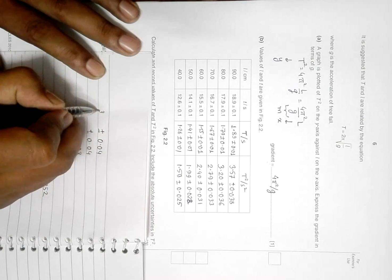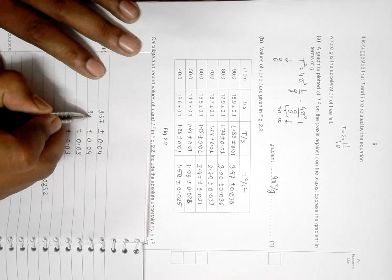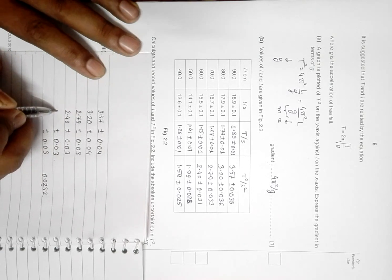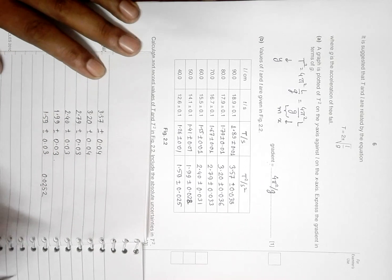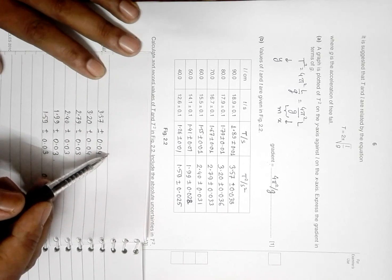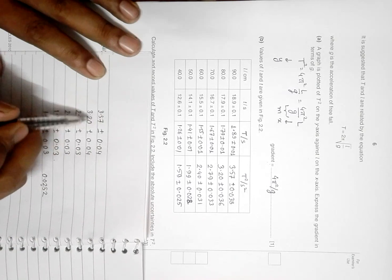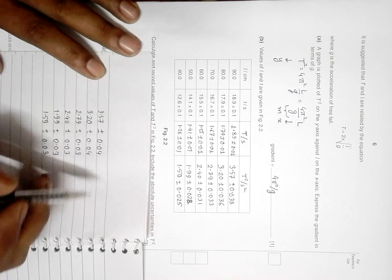It should be 3.57, then 3.20, then 2.79, then 2.40, then 1.99, and then 1.59. This shows that whatever the number of significant figures, this quantity will end at the same place after the decimal. So it's not that if you increase this, you increase this—no, definitely not. Wherever you end the error, the quantity will end right there.